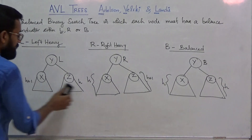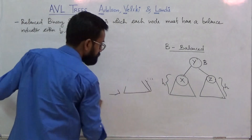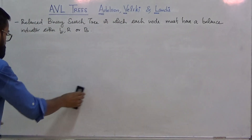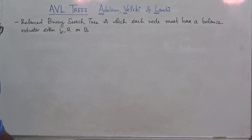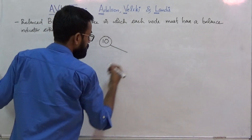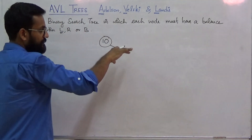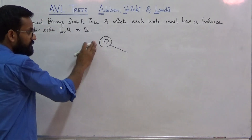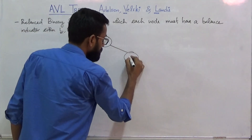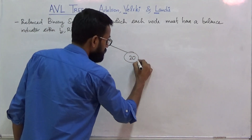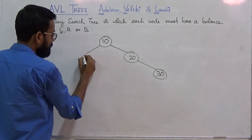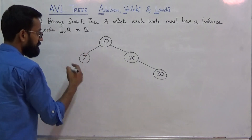Let me introduce an example for an AVL tree. As stated, an AVL tree is a binary search tree. Let the root node be 10, having a right subtree with key values greater than 10, and a left subtree containing key values less than 10. We can also have a left child with the value 7, which is less than 10.